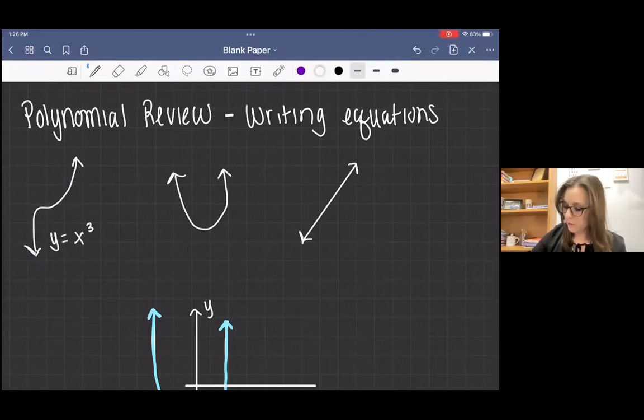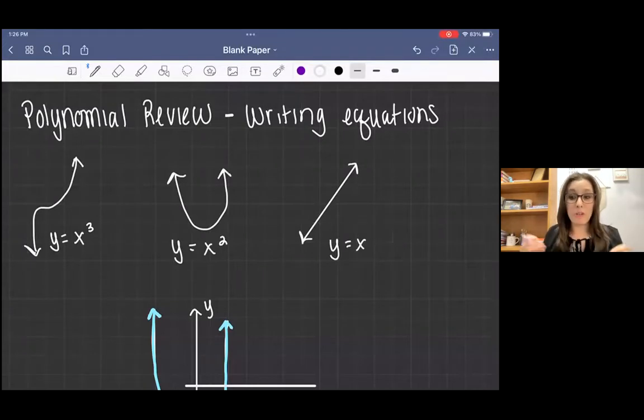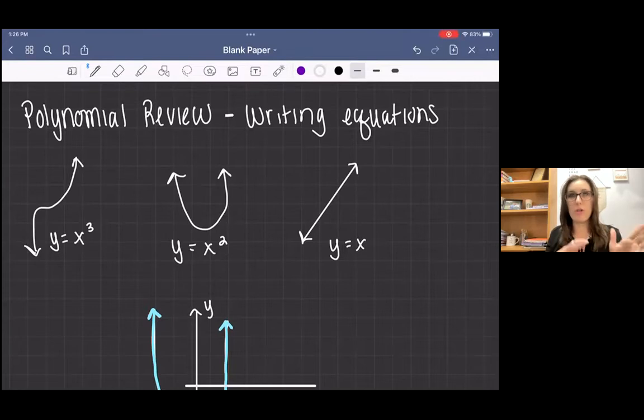And then this middle graph is a quadratic, which is x squared. And then the last one is a linear, which is x. Now, remember, these are the parent functions. So their children can look very different, but the parent function, the function in its simplest form, looks like this.